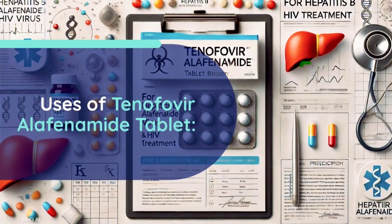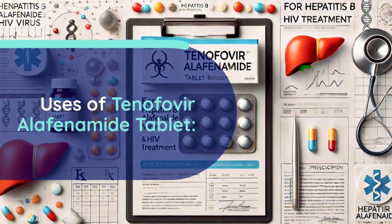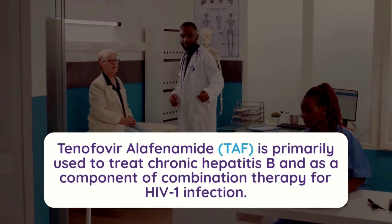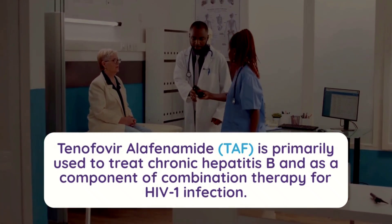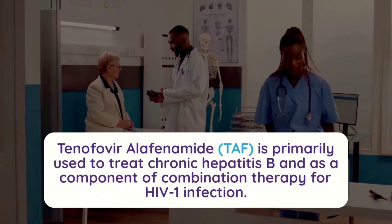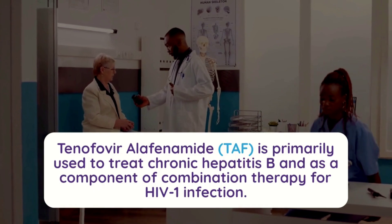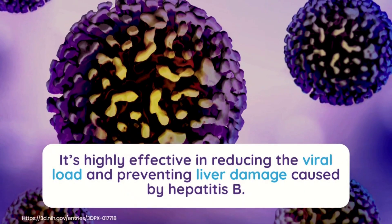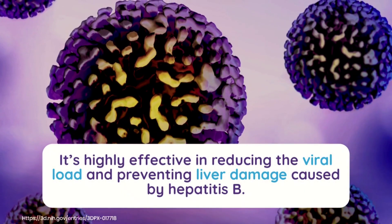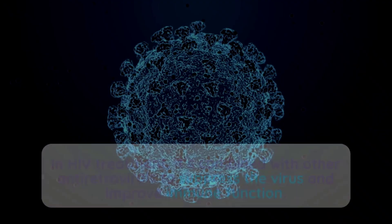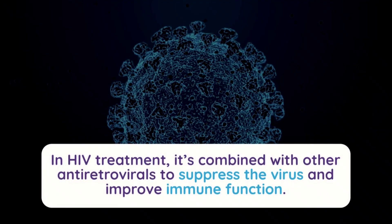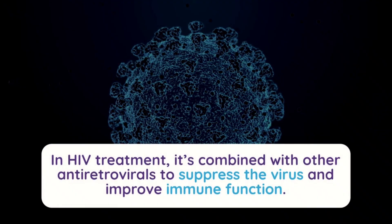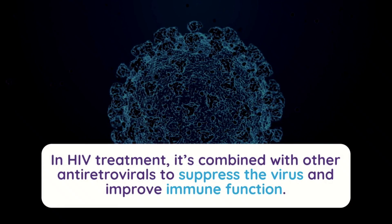Uses of tenofovir alafenamide tablet. Tenofovir alafenamide, or TAF, is used to treat chronic hepatitis B and as part of combination therapy for HIV-1 infection. It reduces viral load and prevents liver damage in hepatitis B. In HIV treatment, it's combined with other antiretrovirals to suppress the virus and improve immune function.